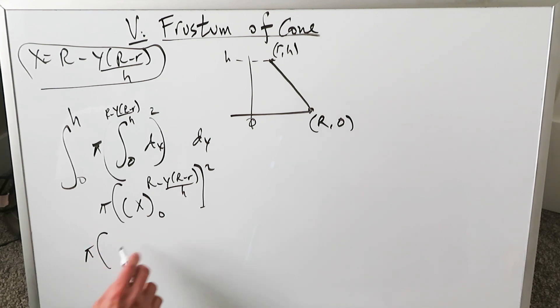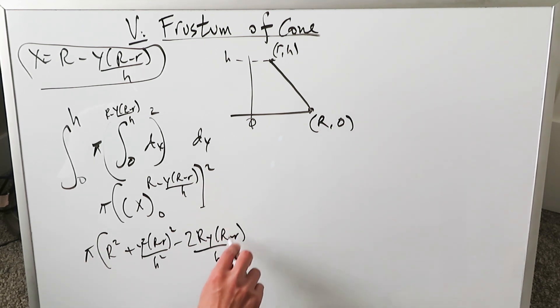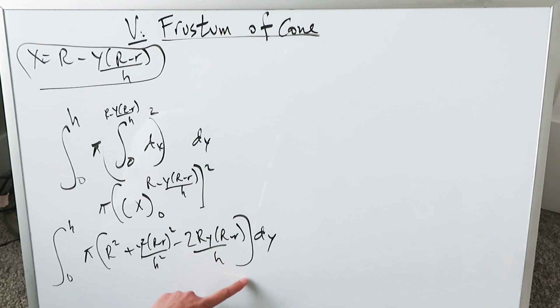You'll have r square plus y square r minus r whole square over h square. That's my a square plus b square minus 2ab and that's going to be 2ry r minus r over h. This is my pi r square which is integrating from 0 to h in dy. This right here is our integral so far and all of this is working towards the volume of a frustum of a cone.